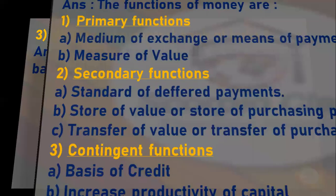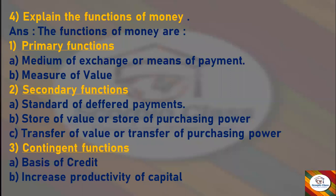Next question: Explain the functions of money. Answer: The functions of money are categorized under three heads. First is primary functions, under which we have medium of exchange or means of payment, and measure of value. Next is secondary functions, under which we have standard of deferred payment, store of value or store of purchasing power, and transfer of value or transfer of purchasing power. The third function is contingent functions, under which we have basis of credit and increase in productivity of capital. These are the functions of money, classified into primary, secondary, and contingent, further divided into sub-divisions.